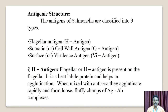Antigenic structure. The antigens of Salmonella are classified into three types. First, the flagellar antigen or H antigen. Second, the somatic or cell wall antigen, O antigen. Third, the surface antigen or virulence antigen, Vi antigen. The flagellar H antigen is present on the flagella. It is a heat-labile protein that helps in agglutination. When mixed with antiserum, they agglutinate rapidly and form loose, fluffy clumps — the antigen-antibody complex.